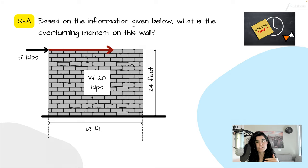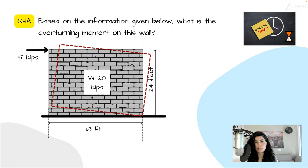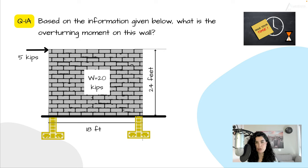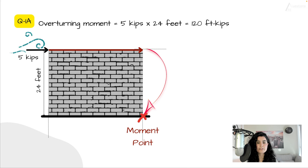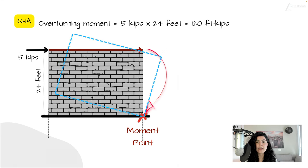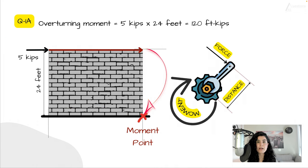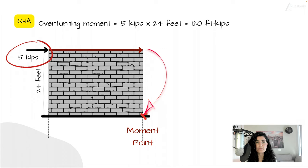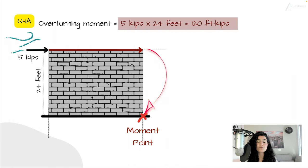This lateral load is pushing from left to right on the wall, and we are going to have some moment reaction or overturning reaction at the other end on the ground. I've marked with an X the moment point, because that is where the wall wants to tip over. The overturning moment is calculated by multiplying the load times the distance: 5 kips times 24 feet gives an overturning moment of 120 foot-kips.